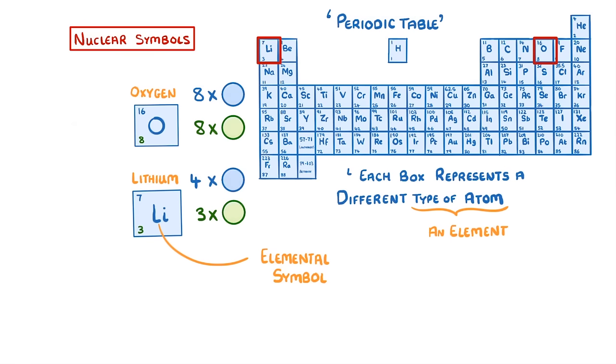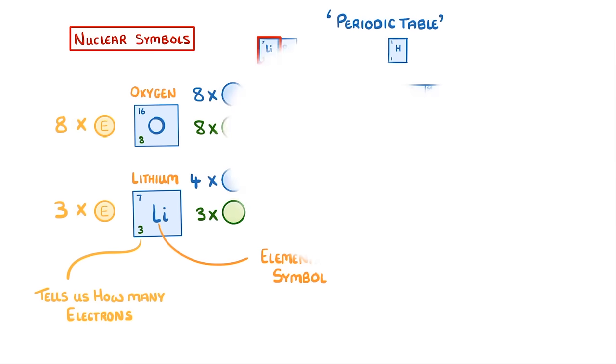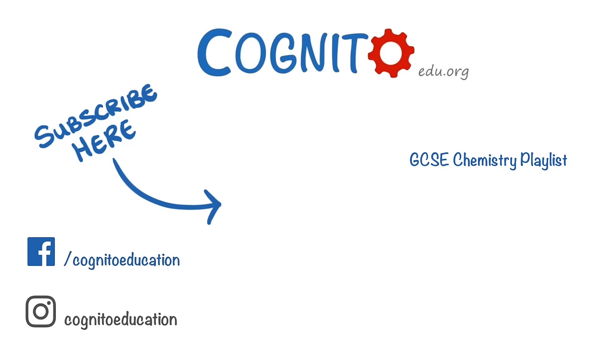As we said at the beginning of the video, the number of protons and electrons in an atom is always the same. So the atomic number also tells us how many electrons the atom has, which means oxygen would have 8 electrons, and lithium would have 3. Anyway, that's all for today. So I hope you found that video useful, and we'll see you next time.